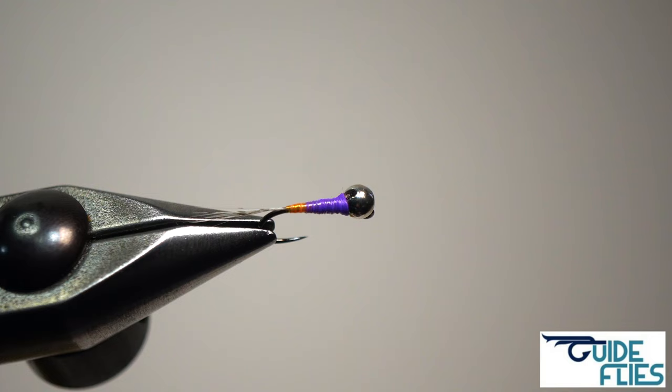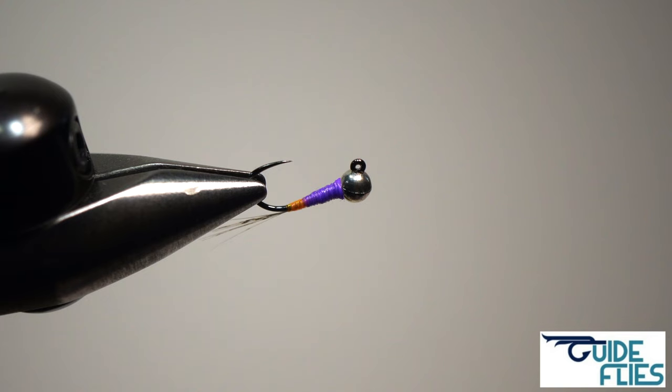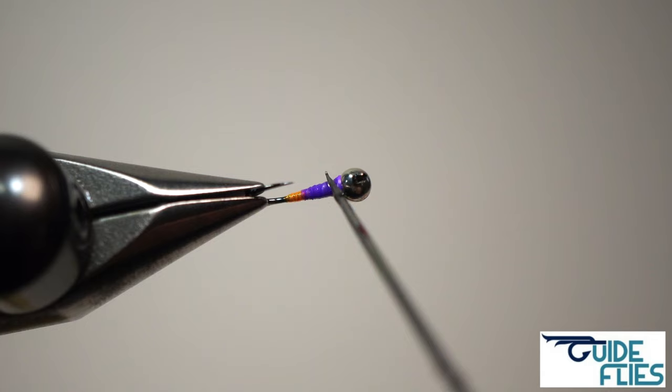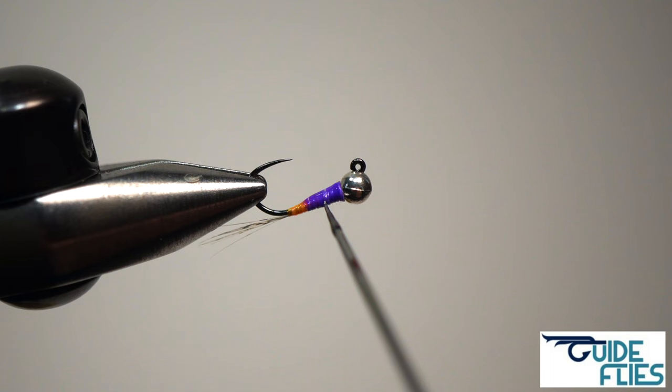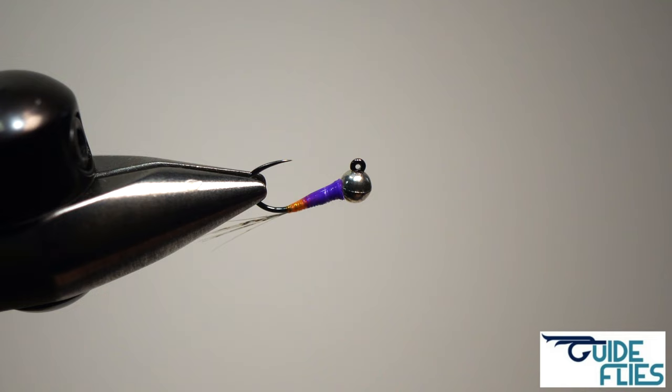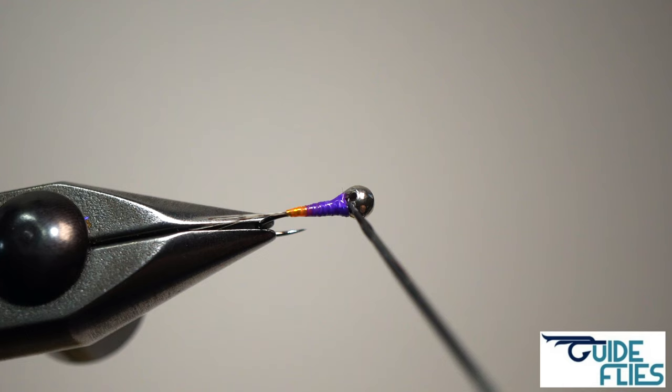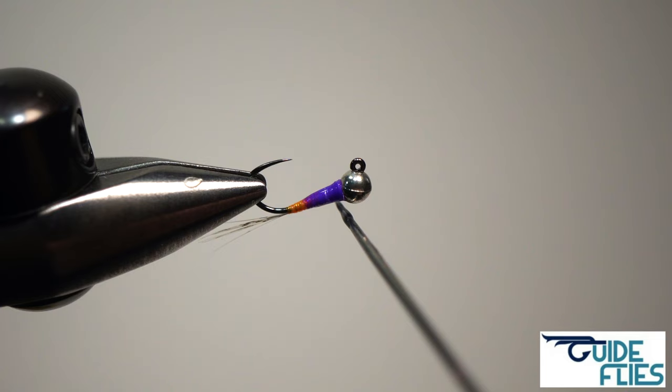Now the next step is what makes it a Perdigon. We're going to put some UV resin over it. I'm going to use some Solaris bone dry because this stuff cures really tack free and has a pretty tough finish to it. I'm just going to take a bodkin because it's a small body. I want to be pretty exact where I put it. I'm going to put that over the threads and just sort of let it soak in a bit. Gravity will kind of pull it around the body of the fly to help get that taper and use the point of the bodkin to get it in and fill in those little spots.